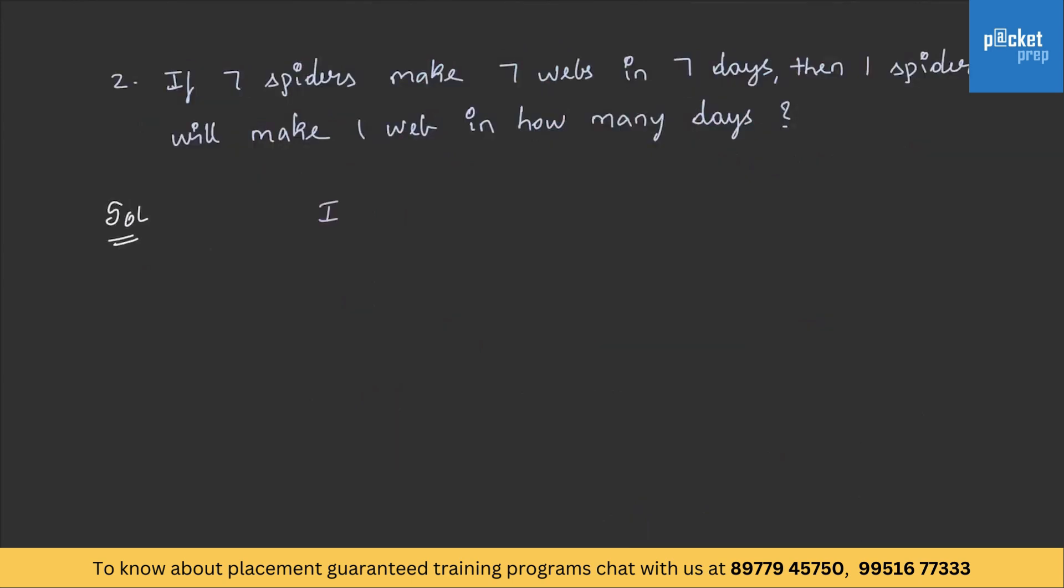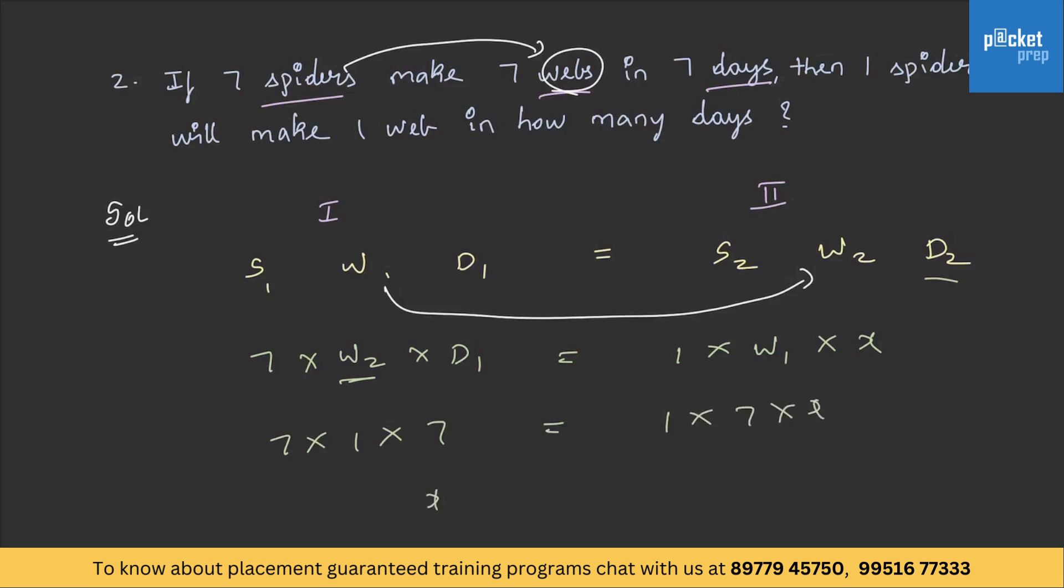So let us solve this. This is exactly similar like what we did in the previous question. Here spiders, webs, and days are the elements. So spider, web, and number of days. Similarly S2, W2, and D2. As spider is making the web, so this is a work, so we have to interchange the works. So number of spiders in the first statement is 7, therefore 7 into W2 as we have interchanged this, into D1 is equal to 1 into W1 into we have to find out D2, therefore it is X. Finally 7 into 1 into 7 is equal to 1 into 7 into X, therefore X is equal to 7 into 7 by 7, and you will be getting X is equal to 7.